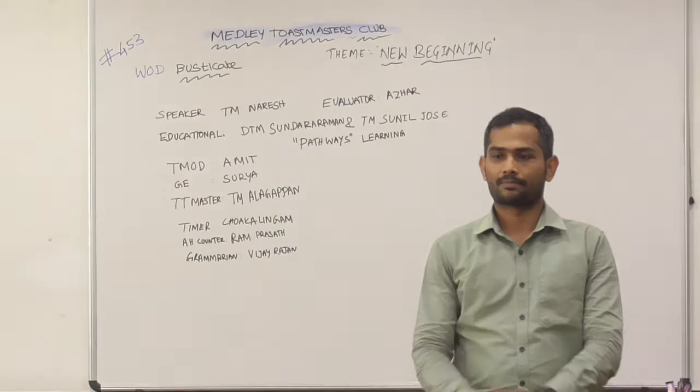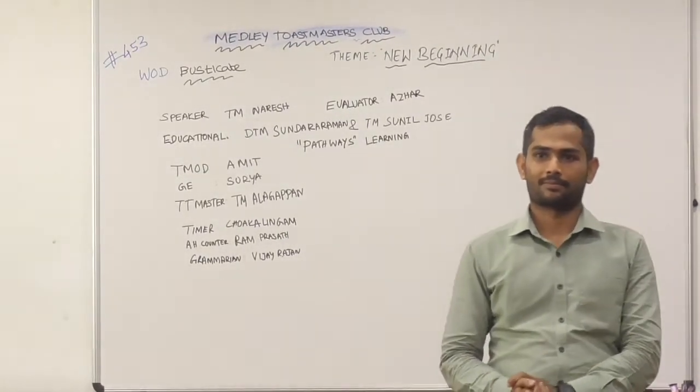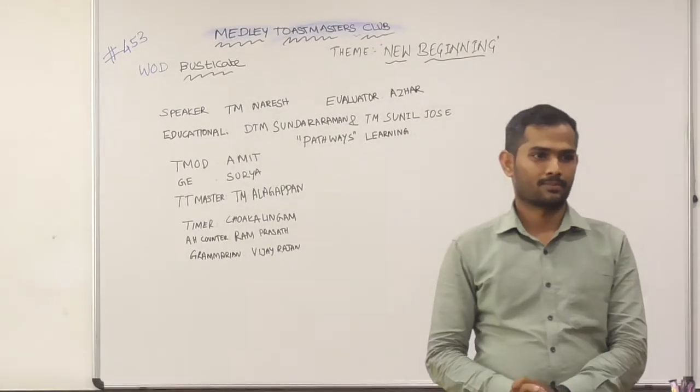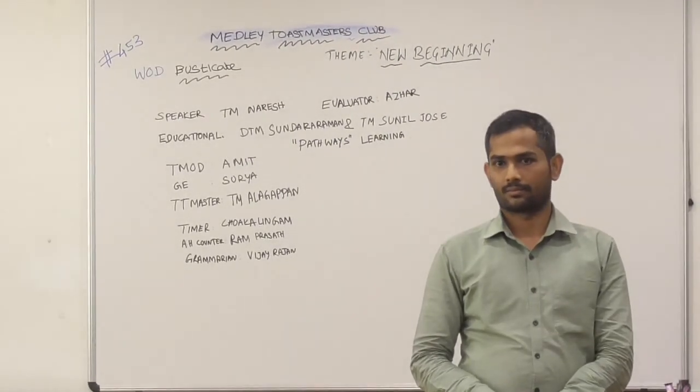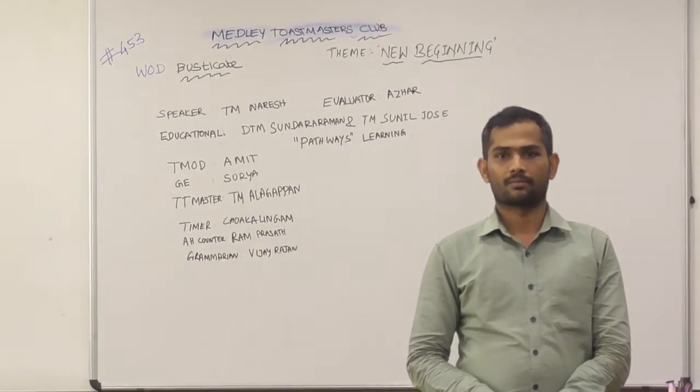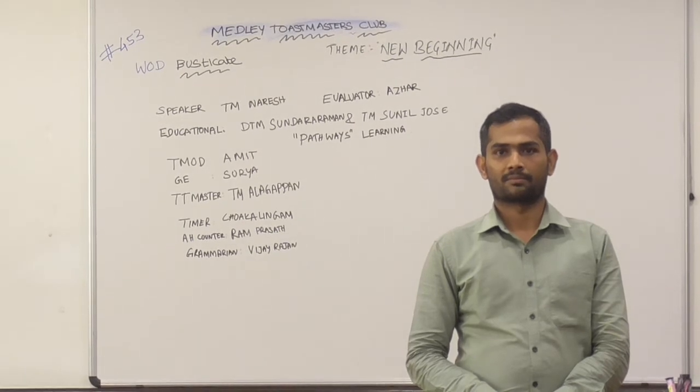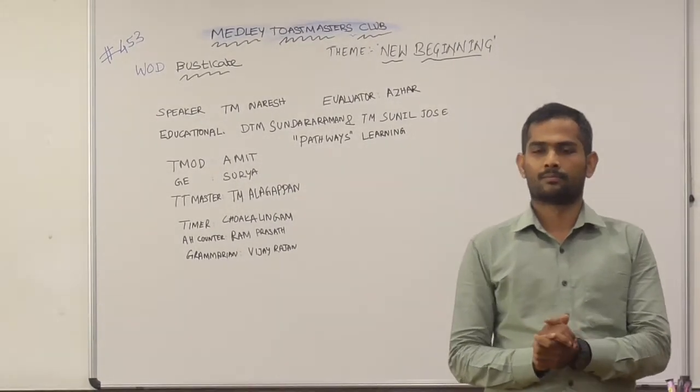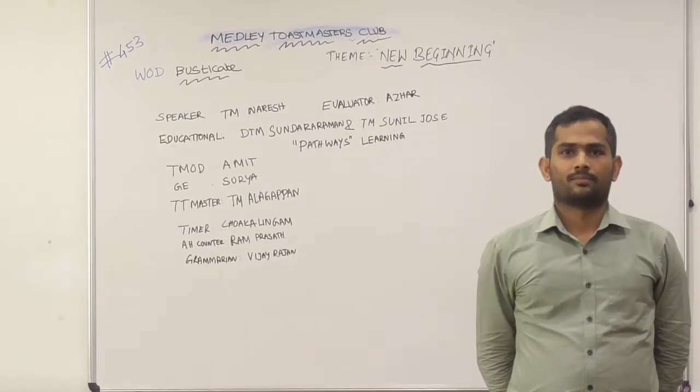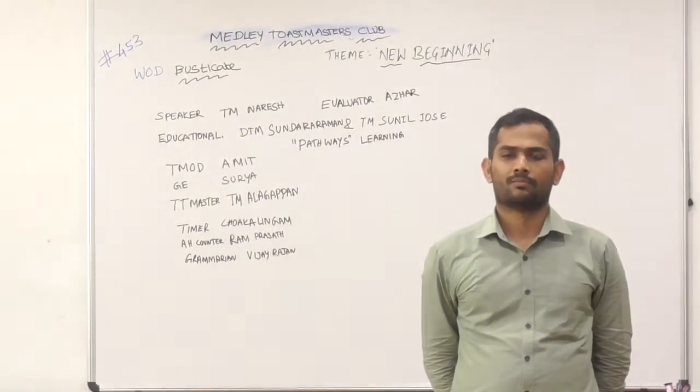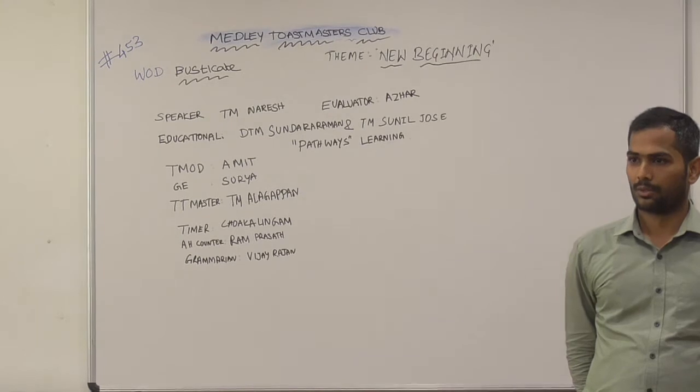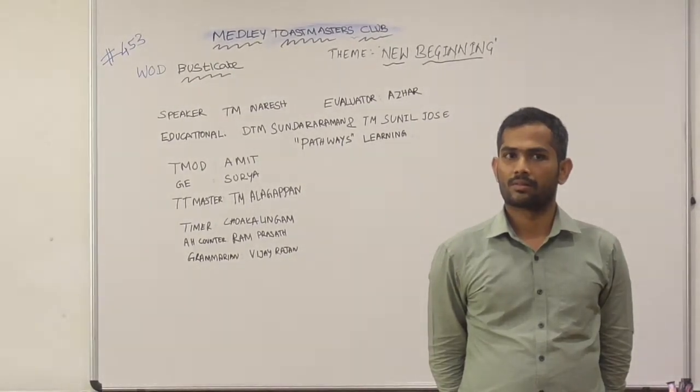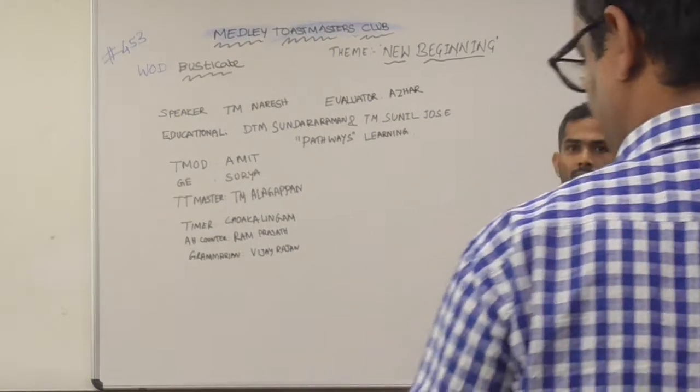Thank you, General Evaluator, fellow Toastmasters and welcome guests. As timer, I will be helping the speakers practice expressing a thought within a specific time. My duty is to time the prepared speeches, table topic speeches and speech evaluations during this meeting. The green card indicates qualifying time. The yellow card indicates target time. And the red card indicates maximum time, and you have 30 seconds to finish up. For a 5 to 7 minutes prepared speech, green card will be shown at 5th minute, yellow card at 6th minute, red card at 7th minute. For evaluators, it is 2 minutes, 2 minutes 30 seconds and 3 minutes. For table topics, it is 1 minute, 1 minute 30 seconds and 2 minutes. I will report qualifying times when called upon at the end of the meeting. Over to you, General Evaluator.